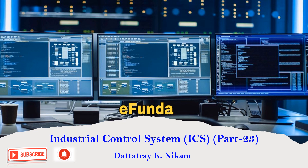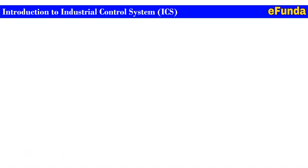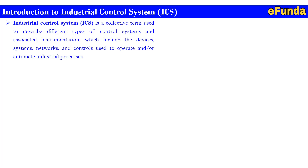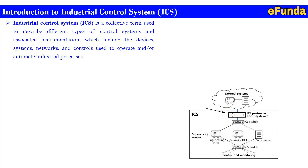Let's begin with our today's topic, Industrial Control System ICS Part 23. Industrial Control System is a collective term used to describe different types of control systems and associated instrumentation, which includes the devices, systems, network, and controls used to operate and automate industrial processes.